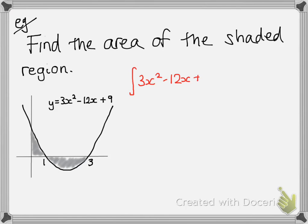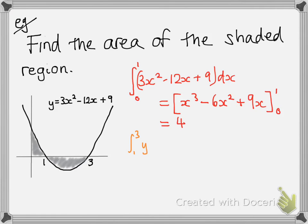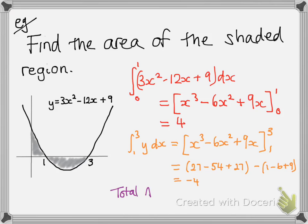So, we set up our integral. We're going to go between 0 and 1 to begin with. And then, the other part between 1 and 3. On this one, those two areas happen to be the same again. So, we get our total area of 8 units squared.